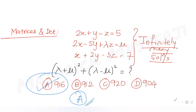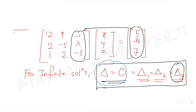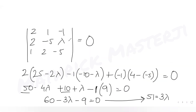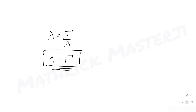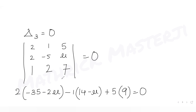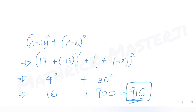I hope you've understood how to solve this type of question. We used the condition that for infinite solutions the determinant of the coefficient matrix equals 0 — that gave us λ = 17. Then using Δ₃ = 0, where we replace the z-coefficients with the RHS values 5, μ, 7, we got μ = -13. Substituting into the expression gives the answer 916, which is option A.